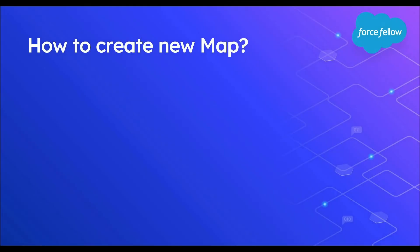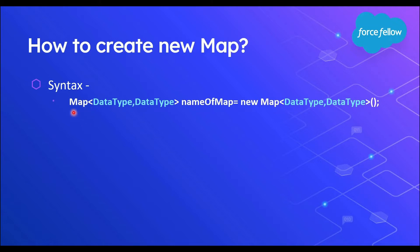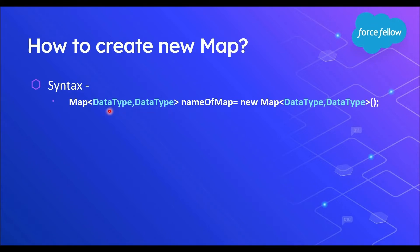Now let's see how we can create a new map in Apex. For the syntax, first we write 'map', then in angle brackets we provide two data types — the first for the key and the second for the value. In our previous example, roll number is the key so we use Integer, and student name is the value so we use String. After the data types, we provide the name and initialize it using the 'new' keyword.